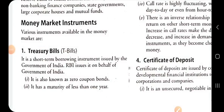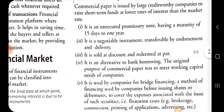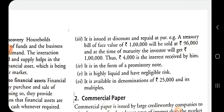The first instrument of the money market is the Treasury bill, also known as the T-bill. It is issued by the government of India to the Reserve Bank of India, and thereafter the Reserve Bank of India issues it in the market to raise short term funds on behalf of the government of India. It is just like a zero coupon bond because it is issued at discount and redeemable at par. Its maturity period is less than one year. It is in the form of a promissory note, is highly liquid, and carries zero risk. It is available in the denomination of Rs. 25,000 and its multiples.